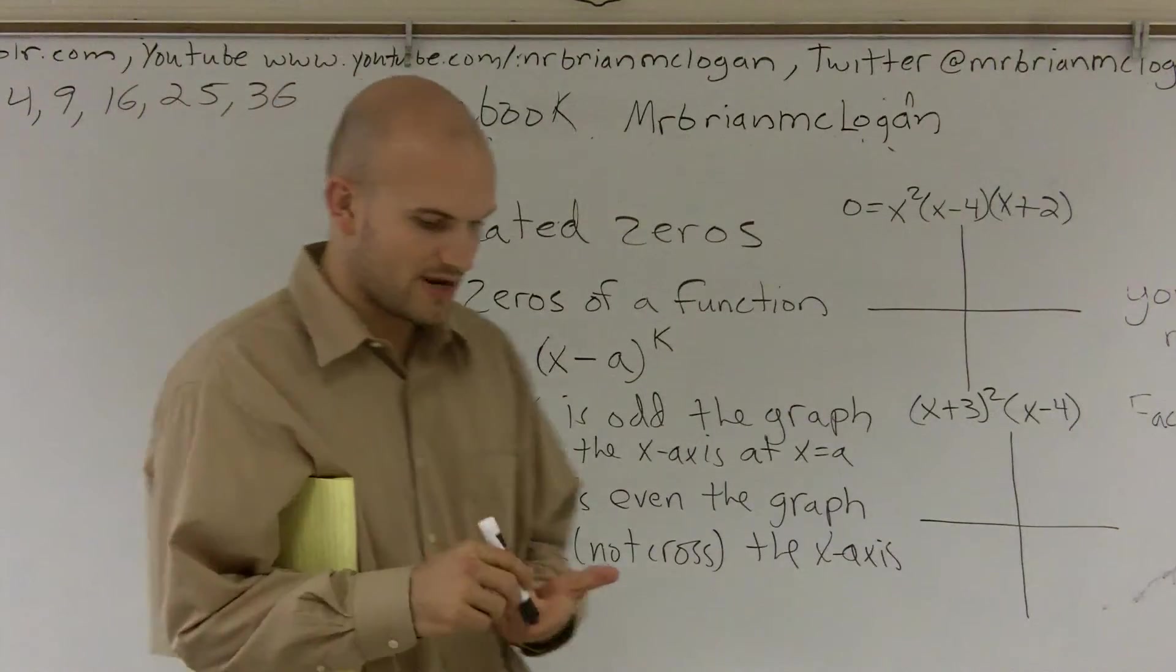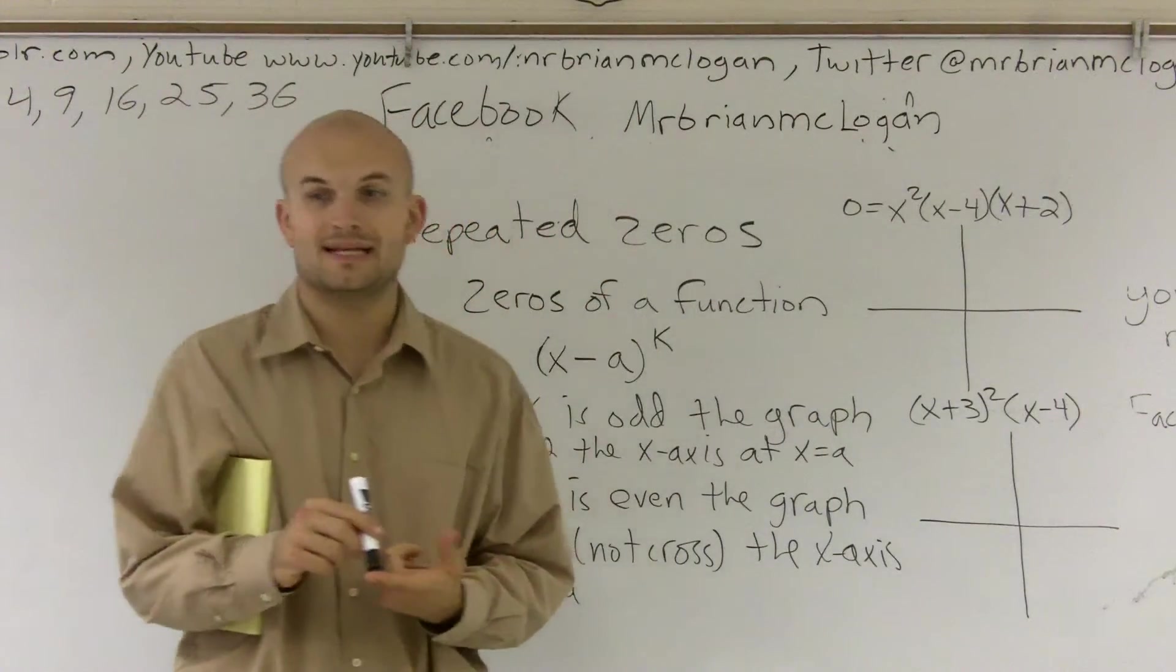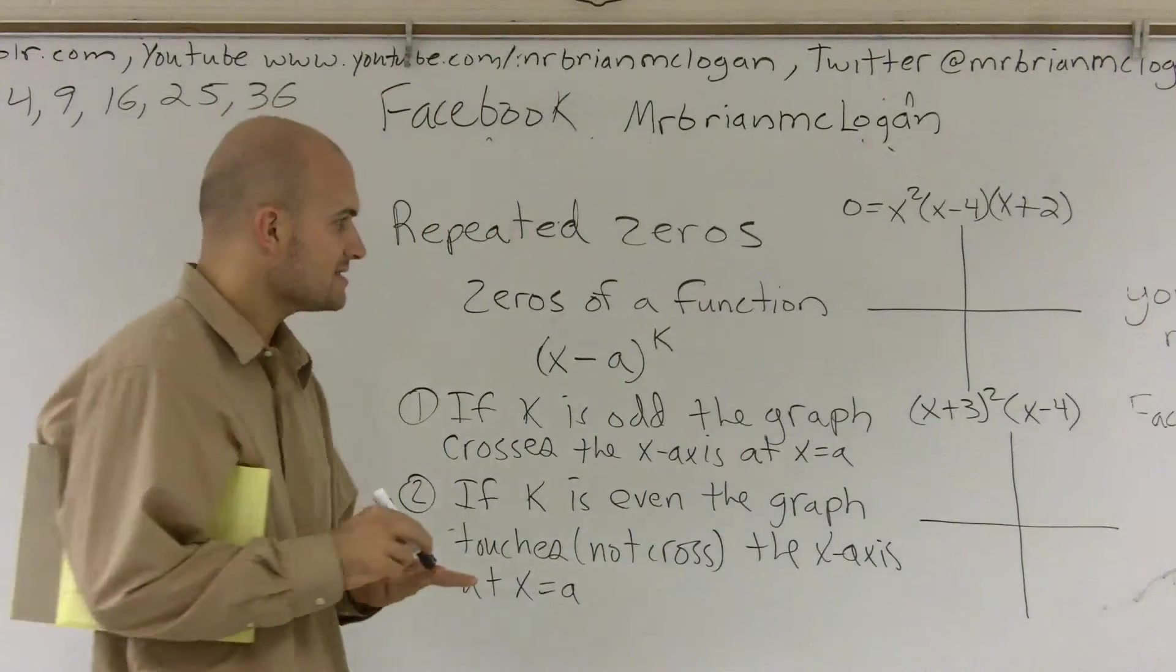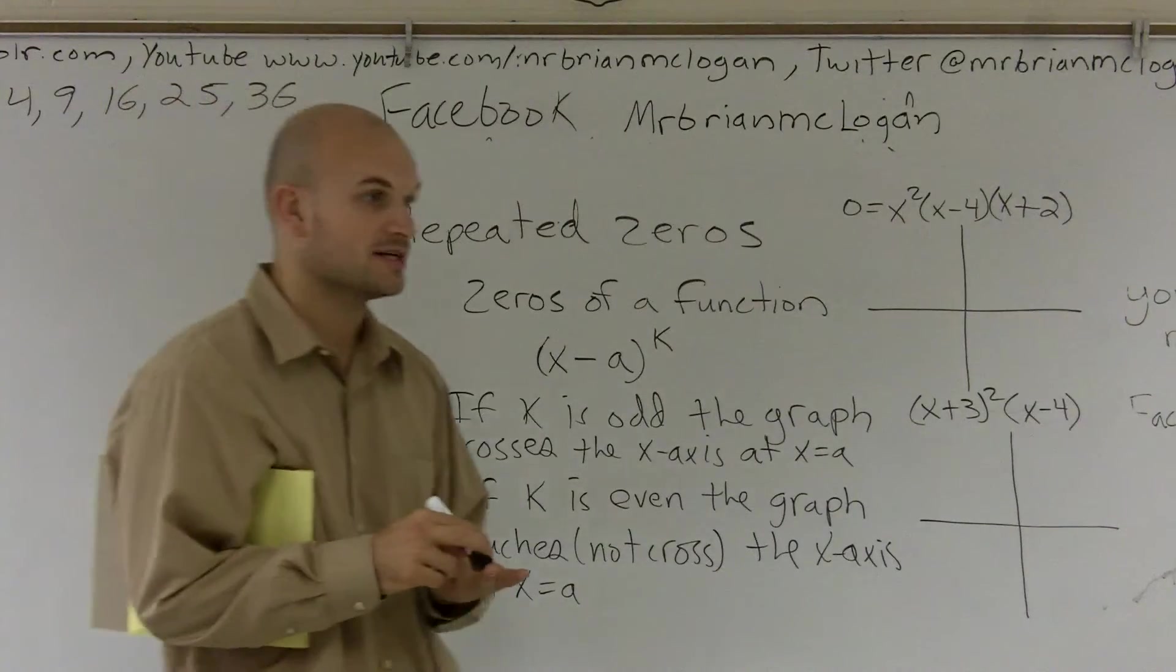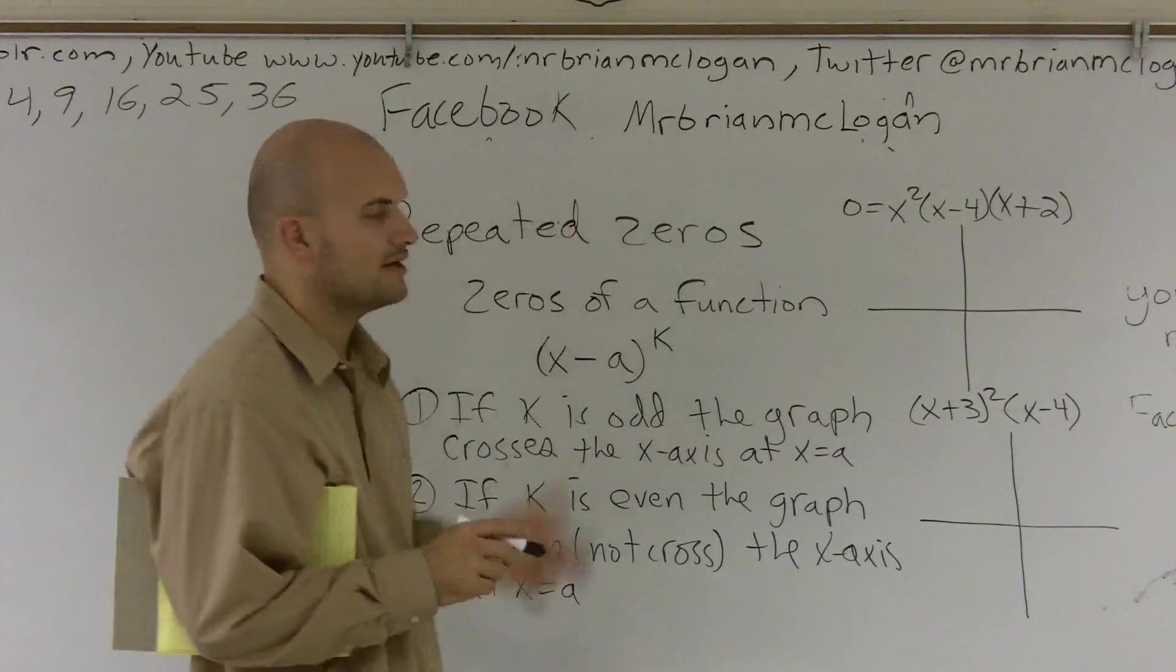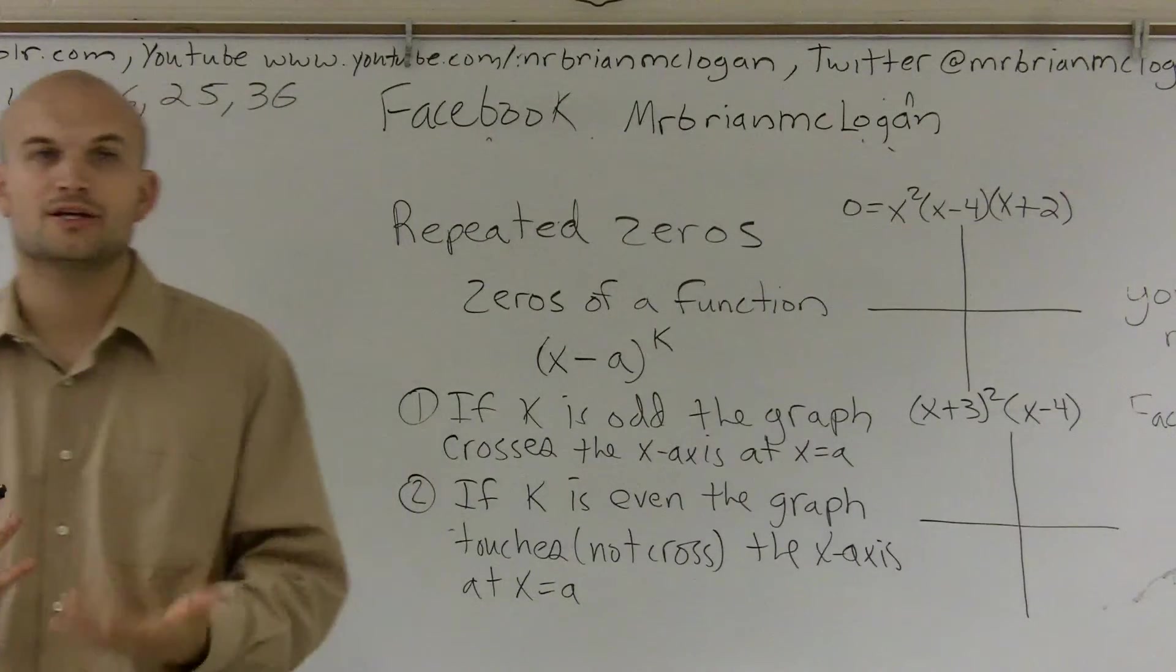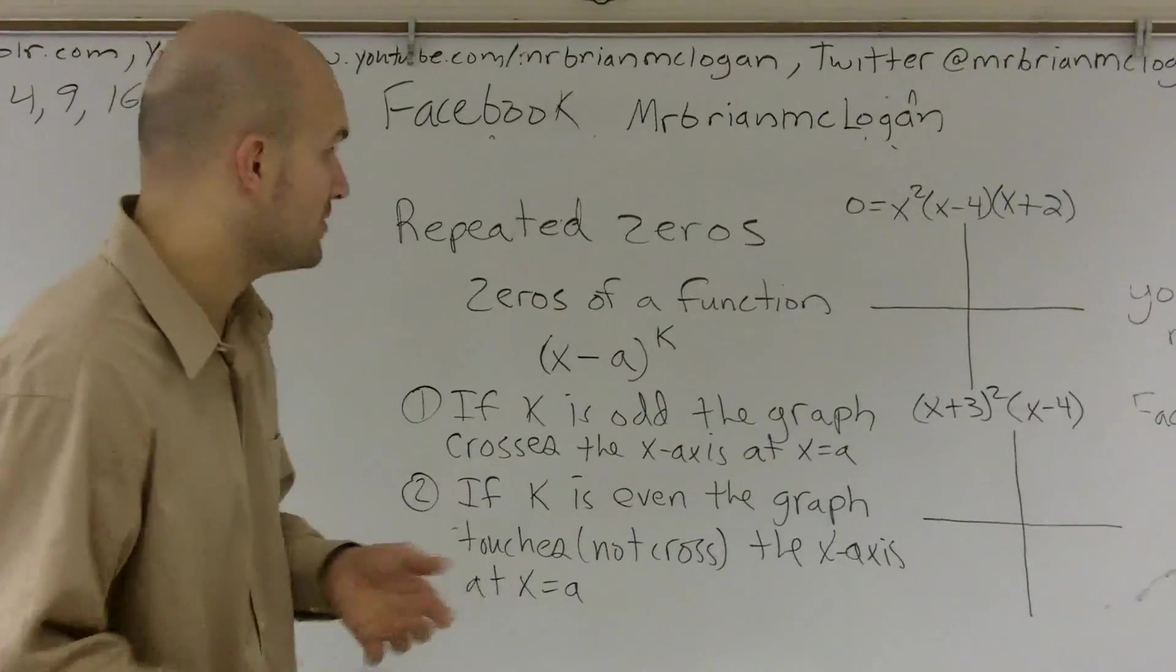So this is very important for us to be able to graph our graphs because we have a couple things. First of all, we need to know the beginning and end behavior, and that's from your leading coefficient test. Then the next thing is we need to find the zeros, and that's by understanding the definition of what a zero is and being able to factor. Then the third thing is understanding the multiplicity. And once we can understand those three points, we really can get a good understanding of how to graph any polynomial function.